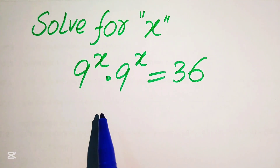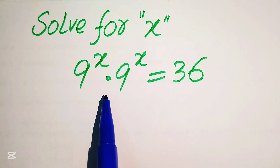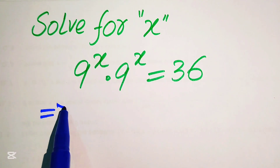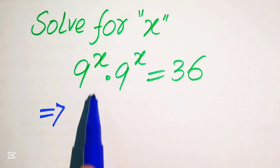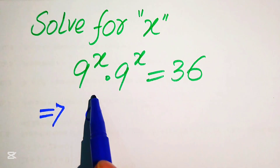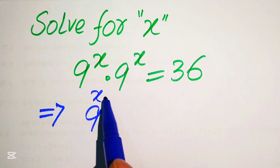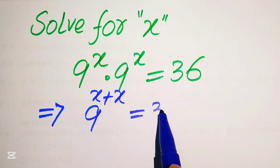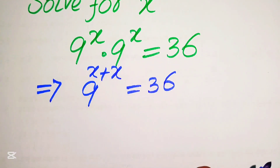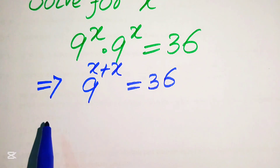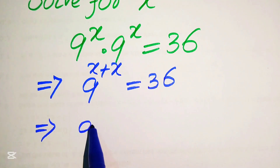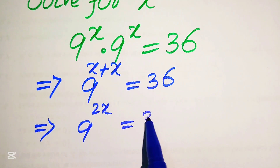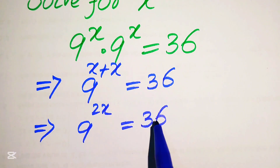Here you see that the bases of these two terms are the same. According to the exponent law, we add the exponents and write it as 9 to the power of x plus x equals 36. In the next step, this becomes 9 to the power of 2x equals 36.